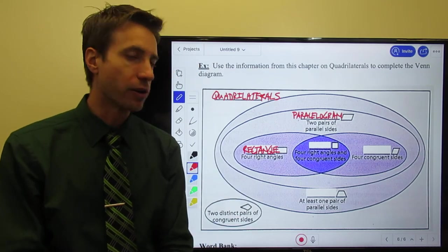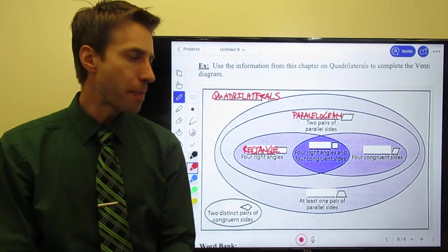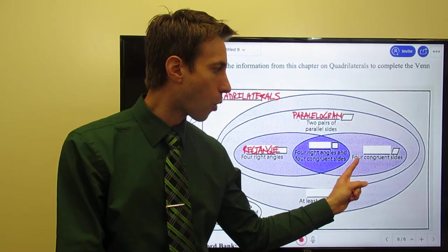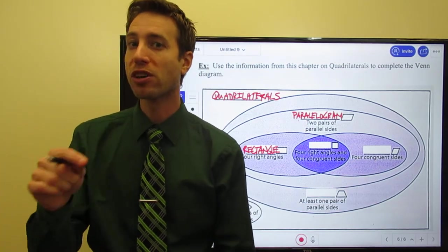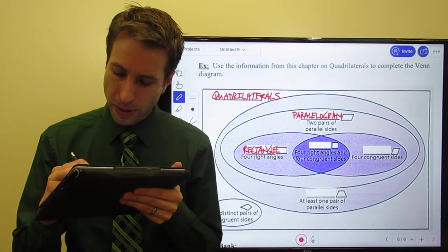Then we talked about another really important parallelogram. That parallelogram was one where the four congruent sides. Well, the parallelogram that had four sides and those sides were all congruent was a rhombus.